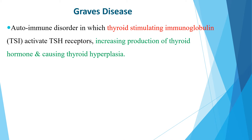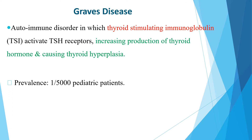Graves disease, the most common cause of hyperthyroidism, is an autoimmune disorder in which thyroid stimulating immunoglobulin activates TSH receptors, increasing production of thyroid hormone and causing thyroid hyperplasia. The prevalence of Graves disease is 1 in 5,000 pediatric patients, and the female to male ratio is around 5 to 1, so it is predominant in females.